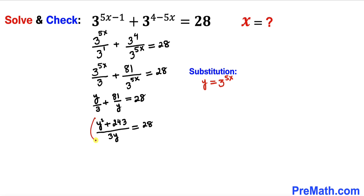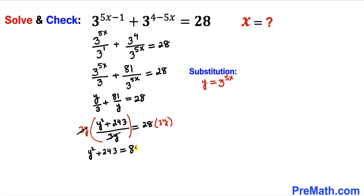Now let's remove the fraction by multiplying both sides by 3y. The denominator cancels, and we end up with y² + 243 = 84y on the right hand side.